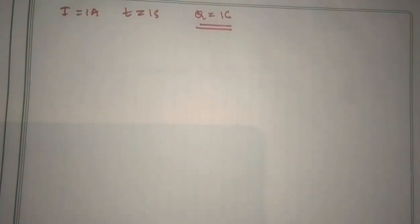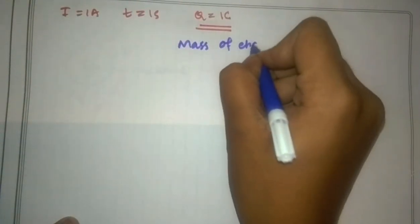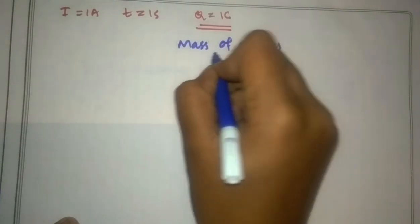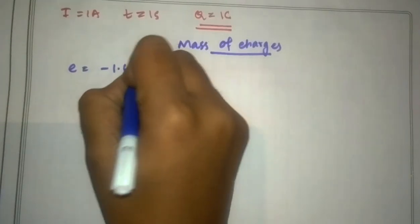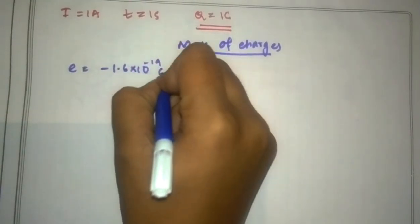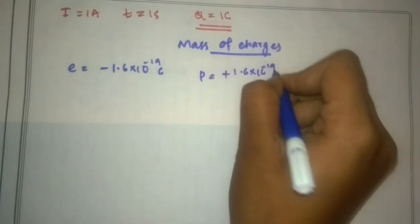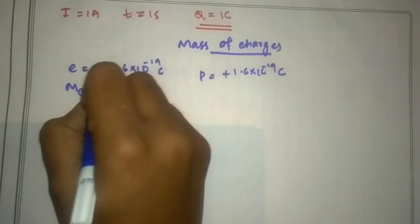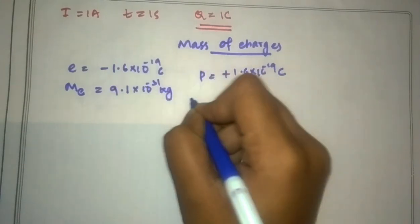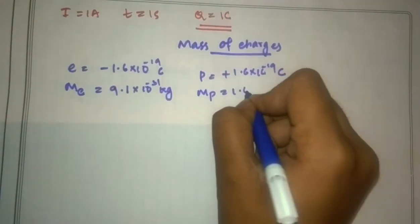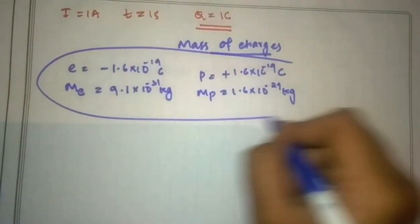Now we have the value of charges and mass of charges. The electron value is negative 1.6 × 10 rise to minus 19 coulomb and the proton value is positive 1.6 × 10 rise to minus 19 coulomb. The mass of the electron is 9.1 × 10 rise to minus 31 kilogram, and the mass of the proton is 1.6 × 10 rise to minus 27 kilogram.